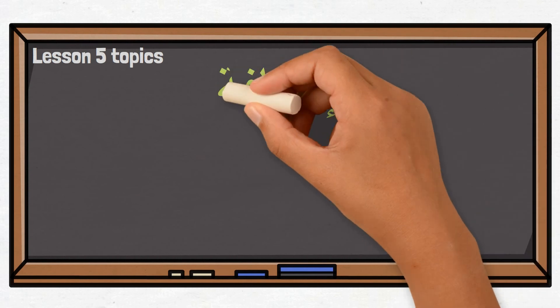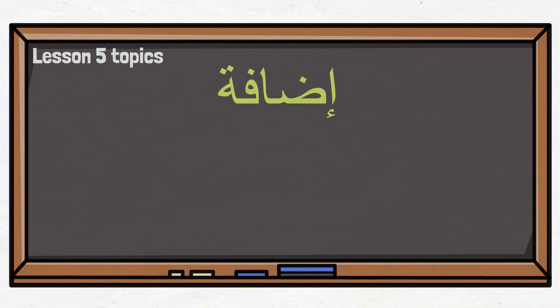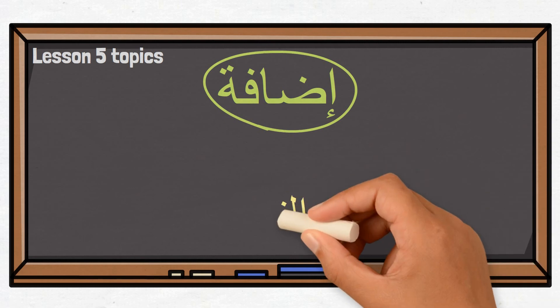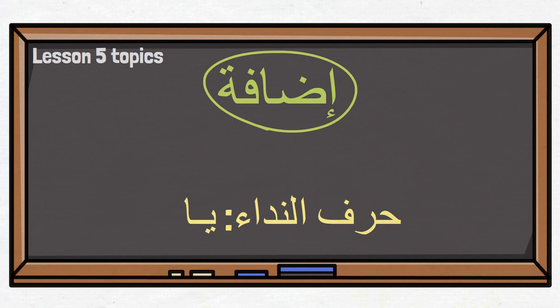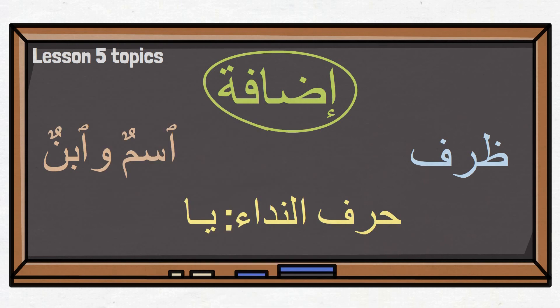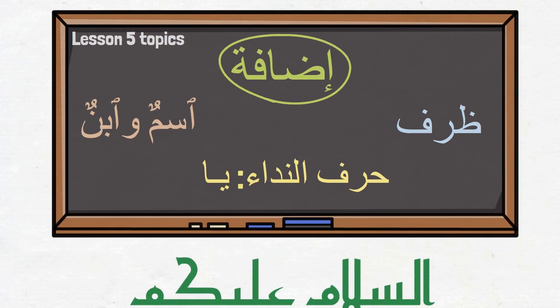We are done with this lesson. Here's what we learned in Lesson 5 of Book 1. First, we learned how to build an إضافة combination from two اسم-type words — مُضَاف and مُضَاف إِلَيْهِ were the main theme. Then we learned about حَرْفُ النِّدَاء يَا and what happens to the اسم after it, as in يَا فَيْصَلُ or يَا وَلَدُ. We were introduced to ظَرْف and how it can come as شِبْهُ جُمْلَة type خَبَر. We also learned the phonetic rule for إسم and ابن starting with هَمْزَةُ الْوَصْل. I hope you feel ready to move on to Lesson 6 in the next video إن شاء الله. Until the next video, السلام عليكم.